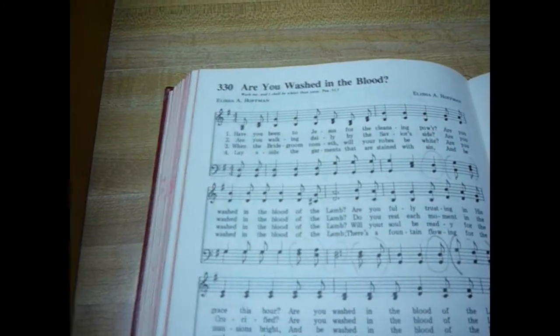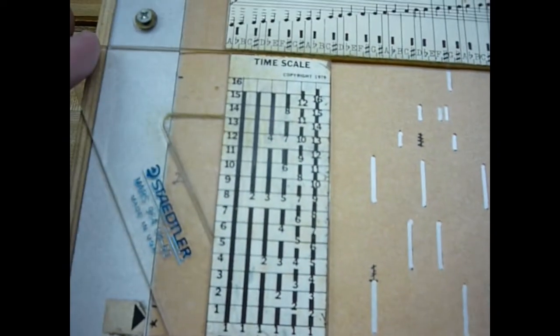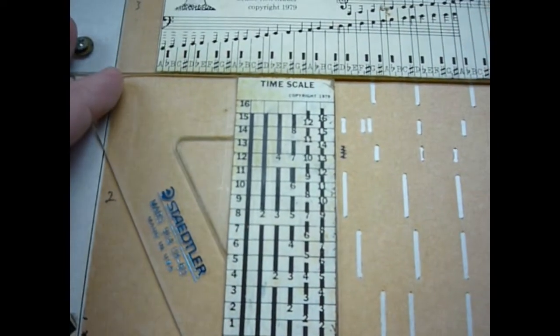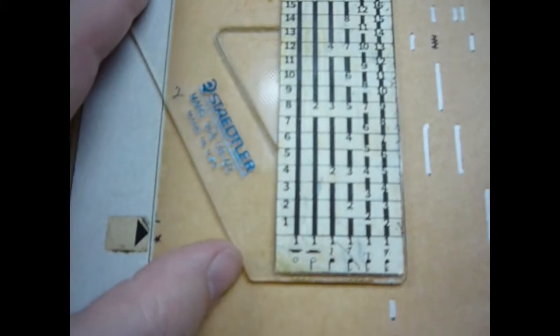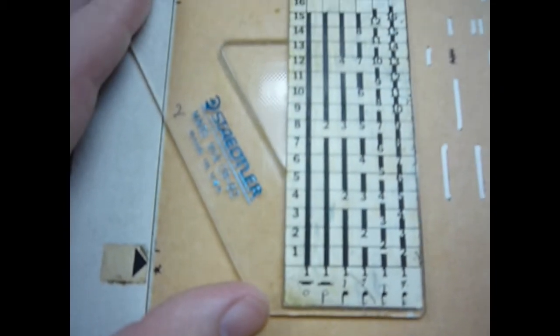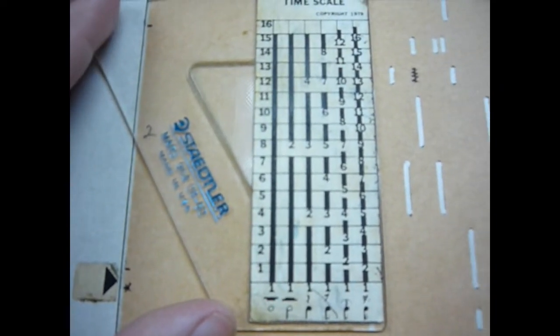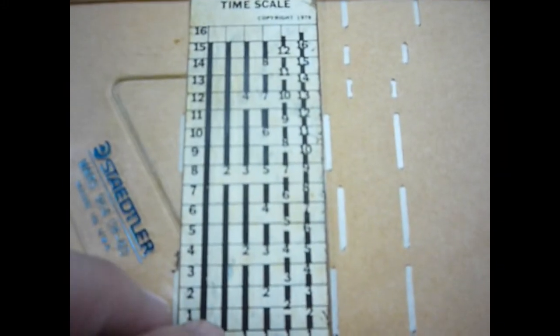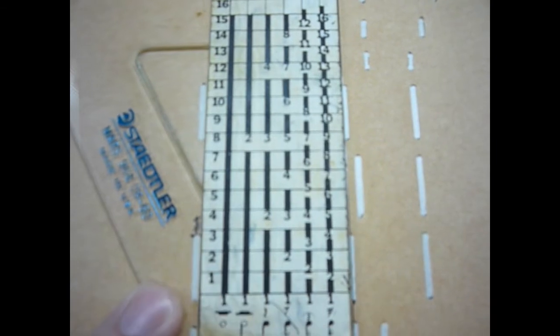The other tool you need is this little square. And you line it up with whatever note you're going to play. And it's got all the different note values. It's listed there as to how long you want to make each line. So I come over here. These, I know, are quarter notes.